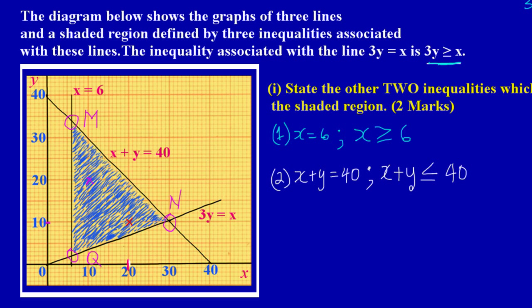We can call the points M, N, and Q. This is 9b part 2. For the first vertex M: initially they gave us the line x = 6, and in the previous video we looked at the scaling and how we got this line to be x = 6. Since this line is x = 6, I need to find the y value at point M by reading across to the y axis.